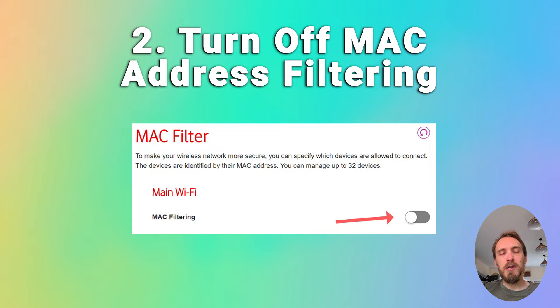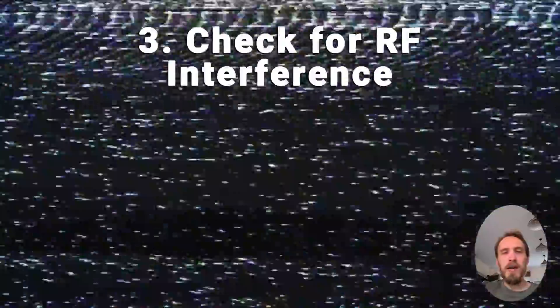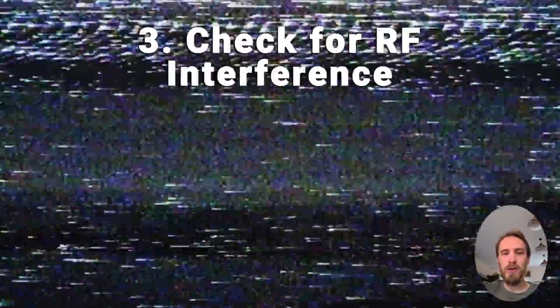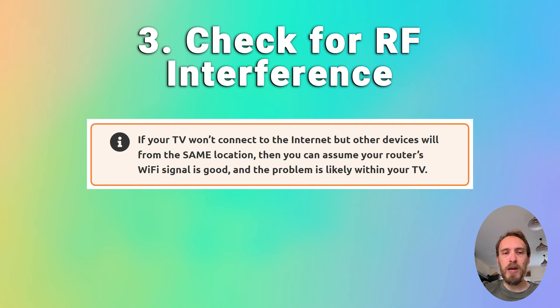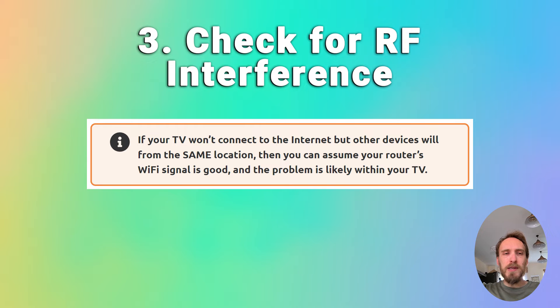If MAC filtering is off, check for Wi-Fi interference or too many devices trying to connect to your router. To test for interference, place your phone next to your TV and try connecting to the internet via the router from your phone. If you have many devices connected, try switching a few of them off.